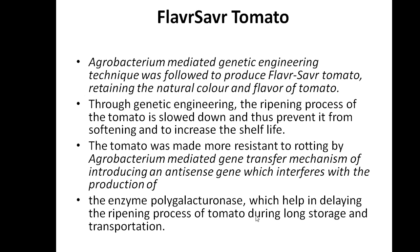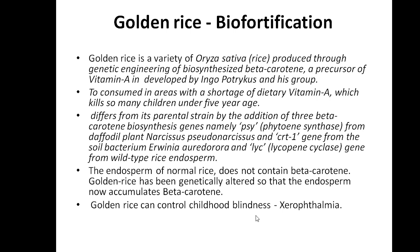The Flavr Savr tomato is prevented from softening to increase shelf life. While a general tomato may stay fresh for one week, this tomato lasts more than 10 days. The tomato was made more resistant to rotting, and degradation is also delayed by this technique. The enzyme polygalacturonase helps in delaying the ripening process, enabling long storage and transportation. This is achieved by Agrobacterium-mediated genetic engineering.